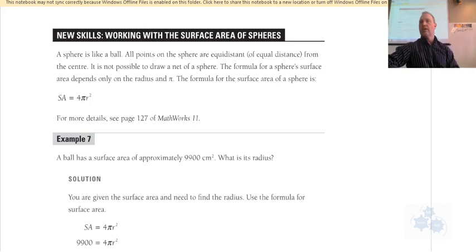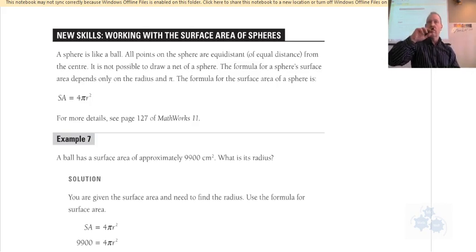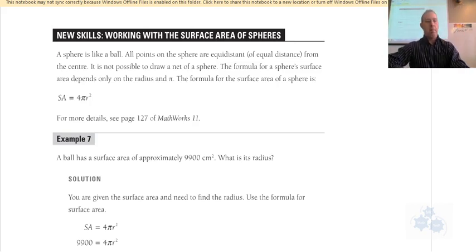Some people actually think that a sphere and a circle are the same. A circle is a two-dimensional round shape, two-dimensional on the paper. A sphere is three-dimensional — it's spherical. A ball has a spherical shape.